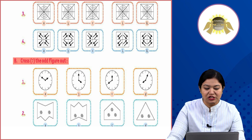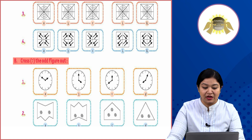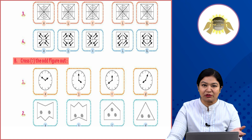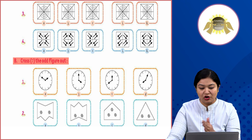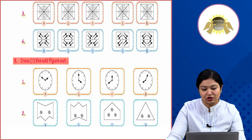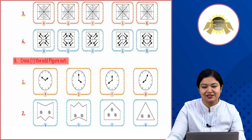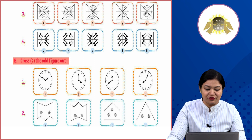This is odd because A had 2 stops, B had 4 — double. D had 4, double. So C is odd because it does not follow the doubling pattern. Circle C as the odd figure.